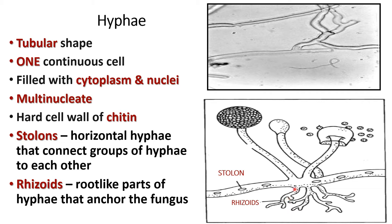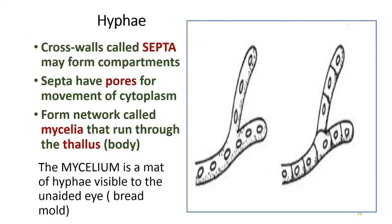The rhizoid is a root-like part of the hyphae that anchors the fungus. The hyphae consist of septa — these cross walls form compartments. The septa have pores which help in the movement of cytoplasm. The hyphae form a network called mycelium that runs through the thallus — a mat of hyphae visible to the unaided eye, as seen in bread mold.